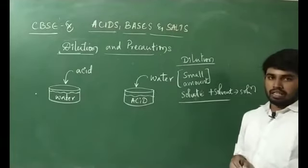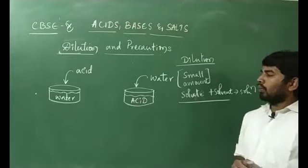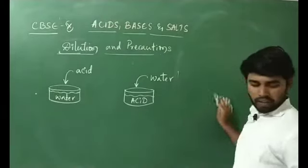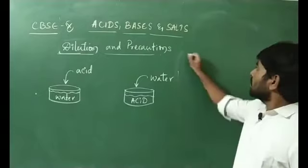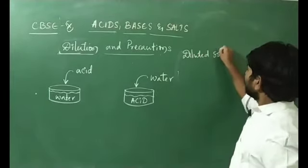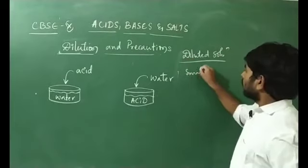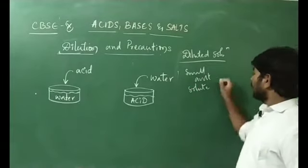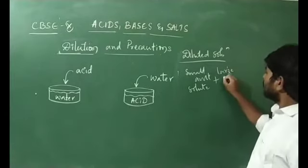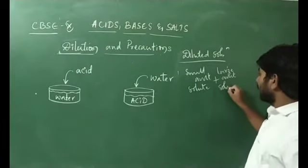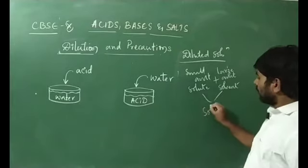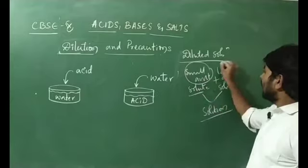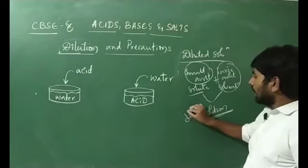There will be a decrease in the concentration of H⁺ ions and OH⁻ ions. As we know, in 9th grade we discussed about solvent and solution. A diluted solution means there will be a small amount of solute. For that, we are adding a large amount of solvent. These two combining together we are going to call a solution. If a solution is made up of small amount of solute and large amount of solvent, then this solution is said to be a diluted one.